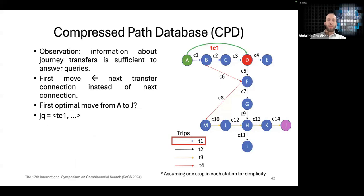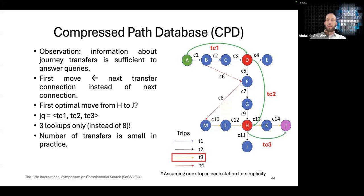If we want now to answer the questions using this new concept, what would be the first optimal move from A to J? It would be using transfer connection TC1 from A to D on a trip T1. Then what is the optimal move from D to J? It would be using transfer connection TC2 from D to H. And finally, we can take TC3 from H to J using T3. This means we only have three lookups instead of eight previously.